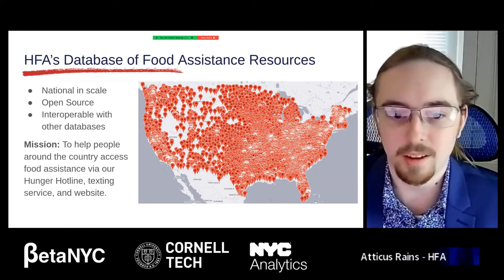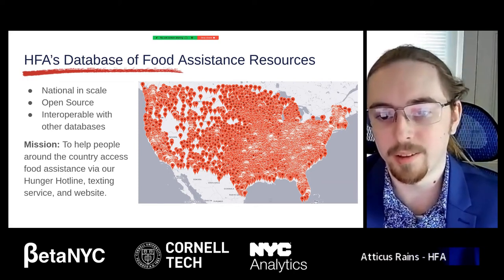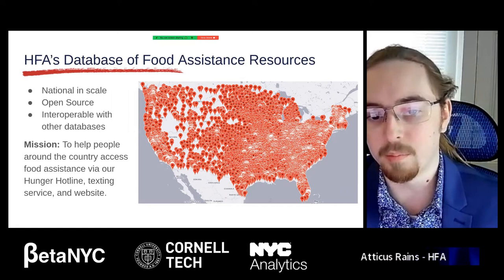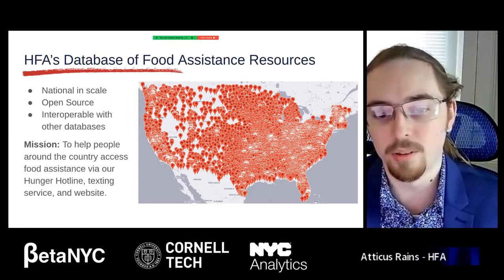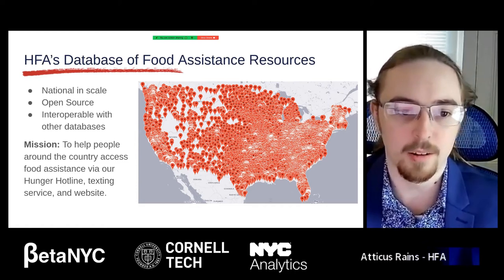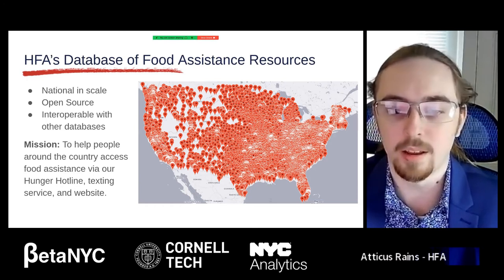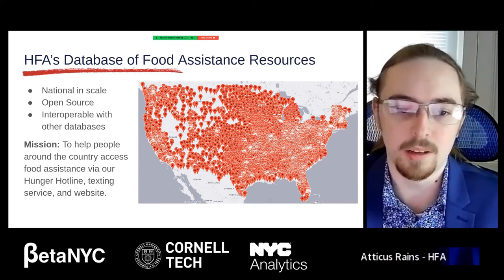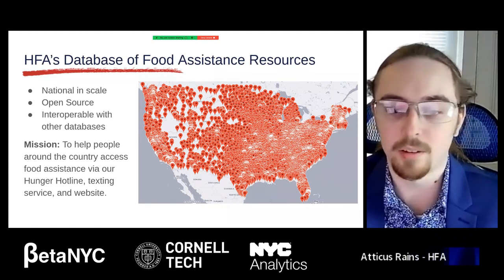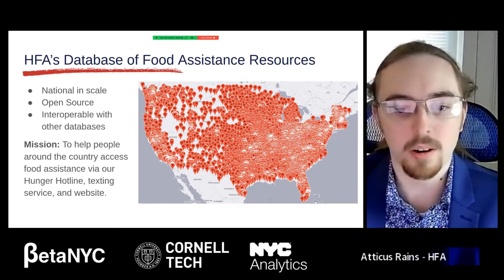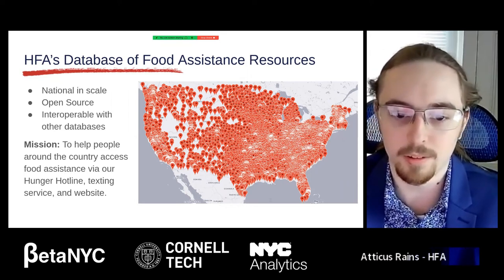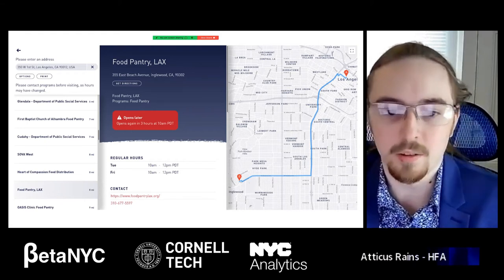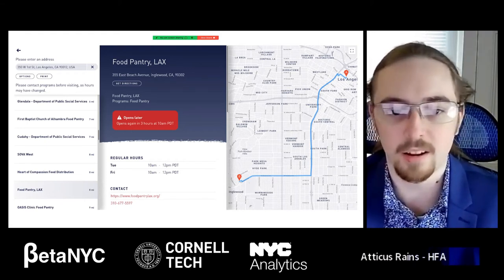What you see here is a kind of snapshot of the current state of our database. It's not quite the 60,000 to 65,000 estimated emergency feeding programs that operate around the country, but our goal is to collect as many of those as possible while keeping our data open source and ensuring it's interoperable and accessible to other databases and researchers. The overarching mission is to help people in need have access to feeding assistance programs near them, whether through our hunger hotline, texting service, website, or our partners' websites.